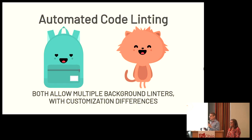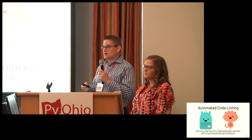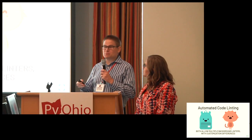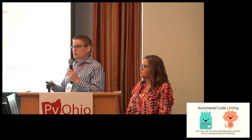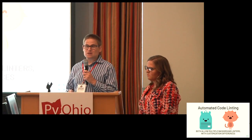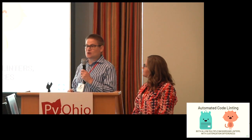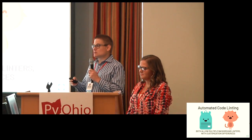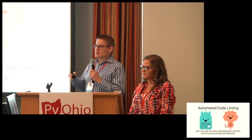It turns out that both VS Code and Vim are really good at running multiple linters in the background. We only showed you how to run Flake8, but it's also possible to run tools like Bandit or PyLint or a wide variety of others. Both the Vim and VS Code mascots are smiling — while they're customized in slightly different ways, they're really good when it comes to automated code linting.